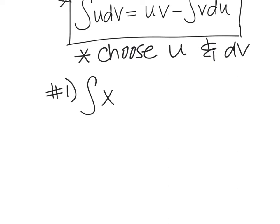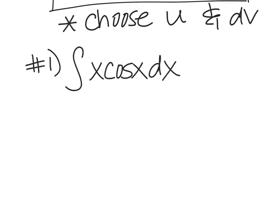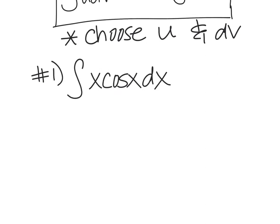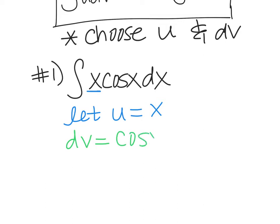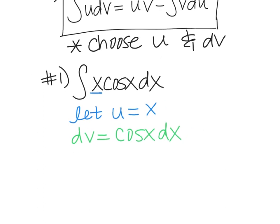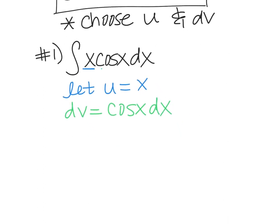We're going to integrate x·cos(x)·dx. If you look at this, it looks like the ones we did with u-substitution, but unfortunately you can't do u-sub here — if you choose x as u it won't work, and if you choose cos(x) as u, nothing reduces. So we have to do this by parts. We're going to let u equal x, and the rest of it, dv, equals cos(x)·dx.